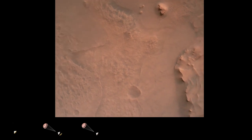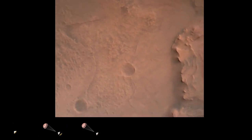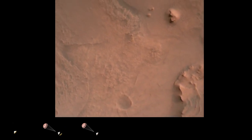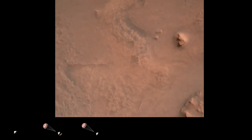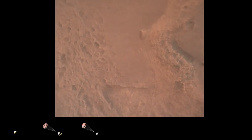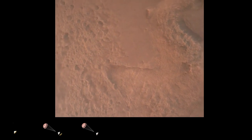Perseverance is continuing to descend on the parachute. We are coming upon the initialization of terrain relative navigation and subsequently the priming of the landing engines. Our current velocity is about 90 meters per second at an altitude of 4.2 kilometers.